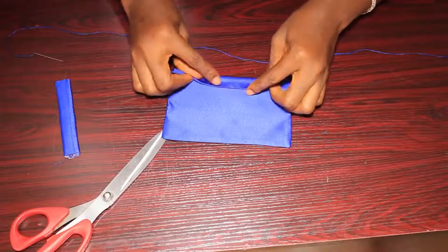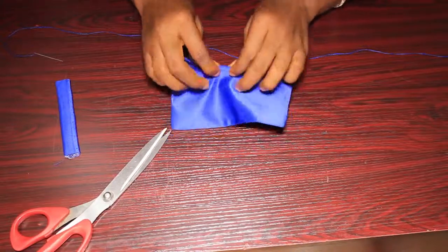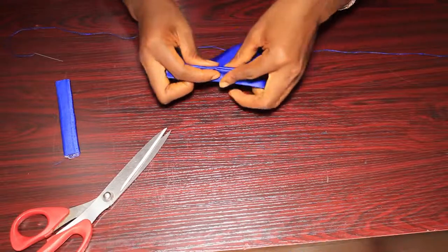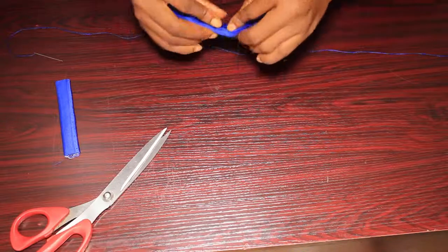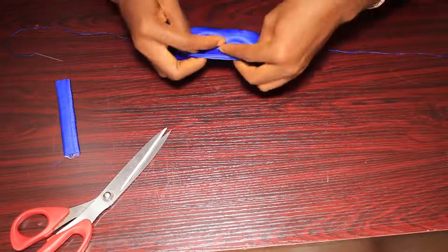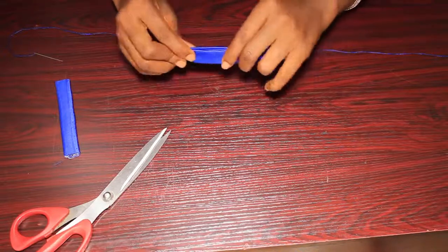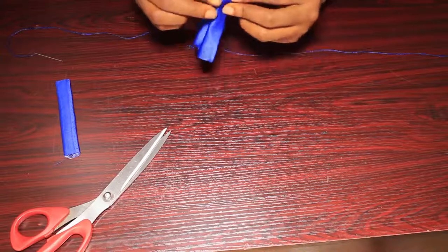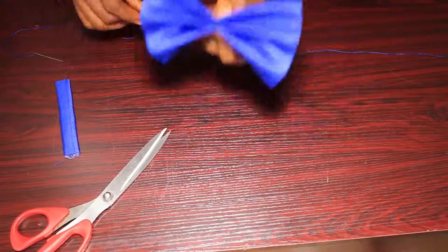We're one step closer to having our bow ready. I'm going to start folding. Just fold that fabric, and then this is what we have. This is pretty, this is already nice.